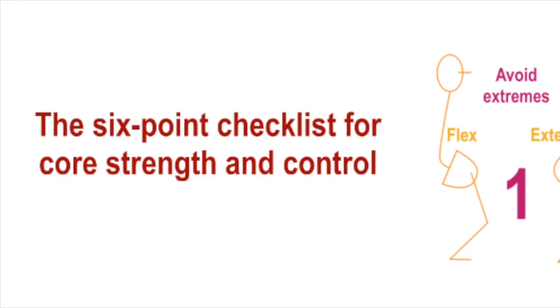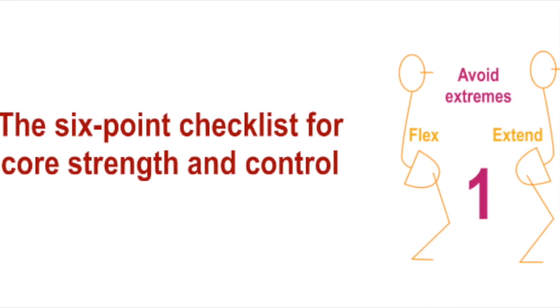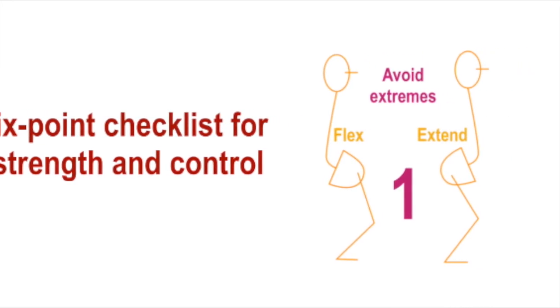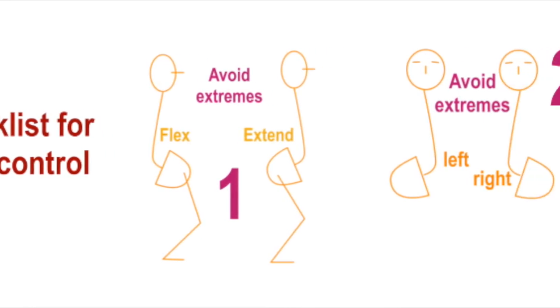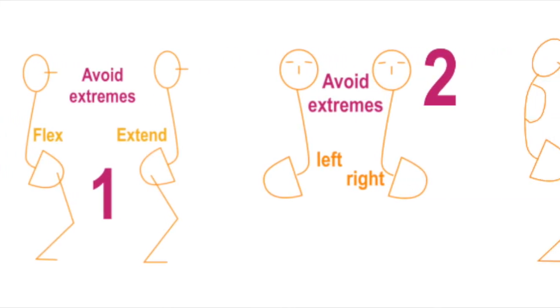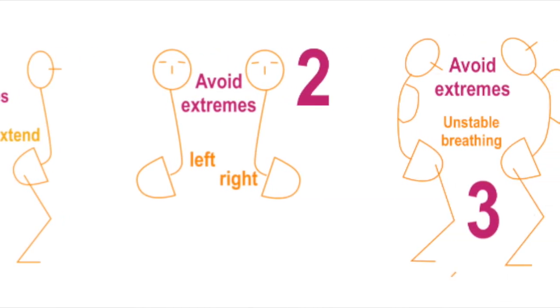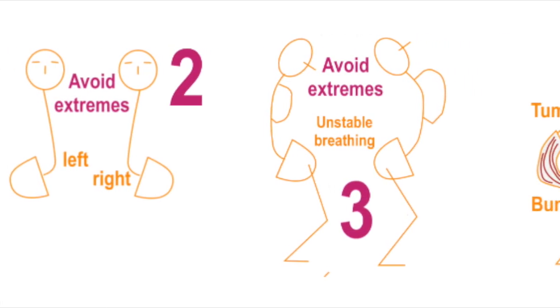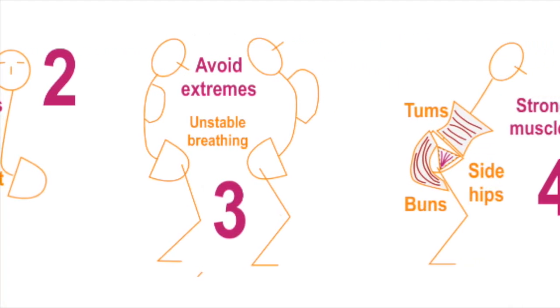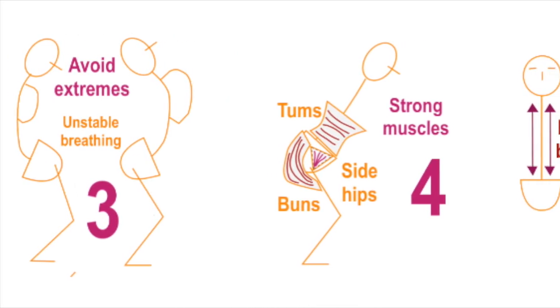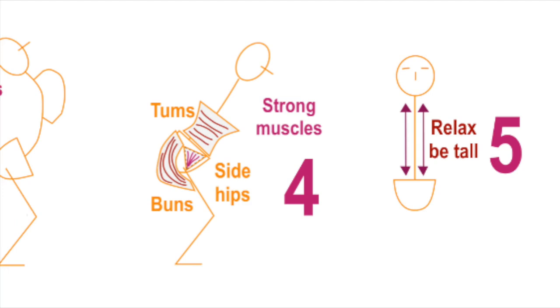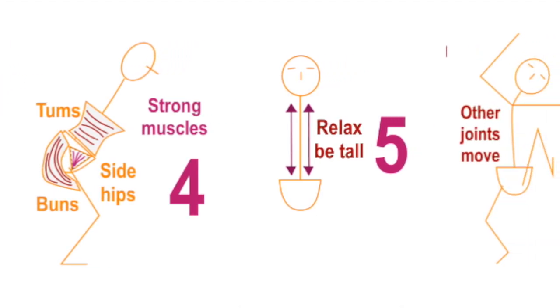Points one to three are about avoiding extremes of movement around the base of the spine. Point four covers the necessary muscle strength, while point five is about being tall, relaxed and attentive to our environment.